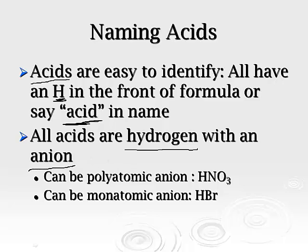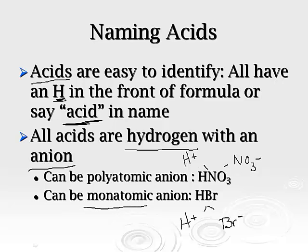You can either have a polyatomic anion — for example, this compound has the hydrogen ion paired with nitrate, which is NO3-. Or this compound has the hydrogen ion paired with the bromide ion, and that is a monatomic anion. Remember, mono means one atom, and poly means many, so more than one.